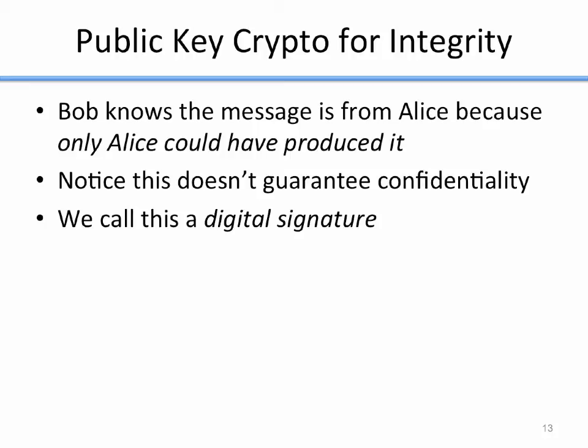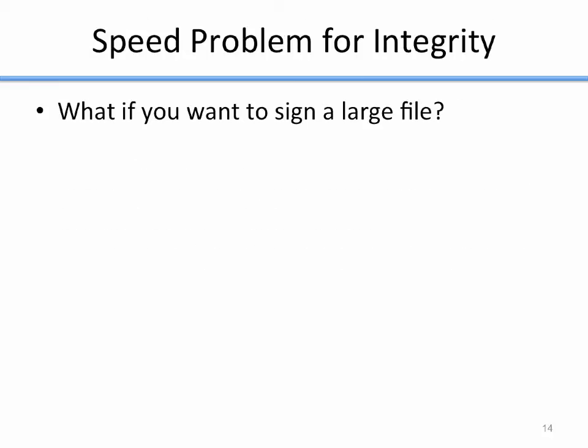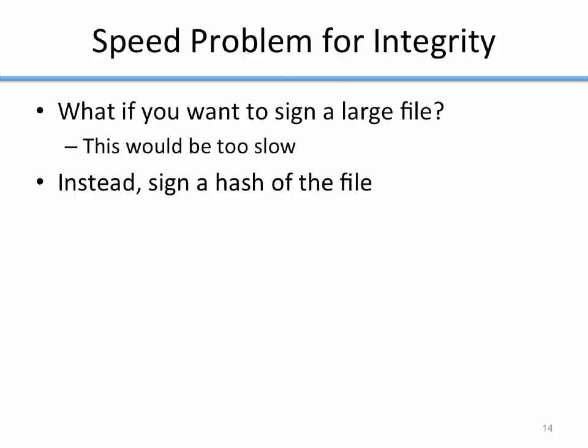The solution is to use public key cryptography for integrity via digital signatures. If Alice wants Bob to know a message is from her, she encrypts it with her private key — producing a digital signature — and sends it to Bob. Bob decrypts it with Alice's public key. Only Alice can perform the encryption because it involves her private key, but anyone can decrypt it because her public key is public — so there's no confidentiality, but only Alice could have produced it. For large files, you sign a hash of the file using SHA-1, get a 160-bit hash, sign that, and send both the file and signed hash to the other party for verification.